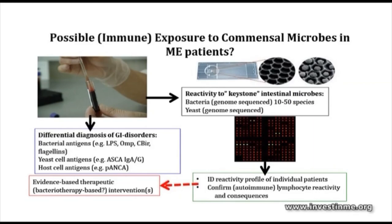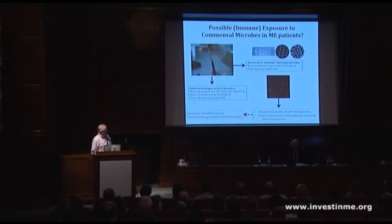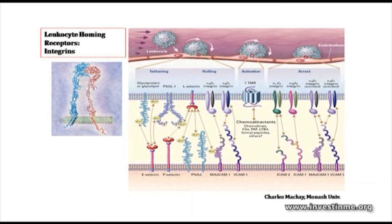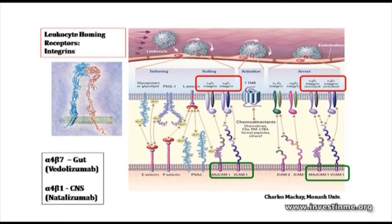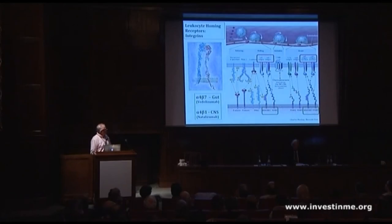This may lead eventually to evidence-based therapeutic interventions for treating ME. We'll also look for brain-circulating lymphocytes. There are molecules called integrins made up of two different polypeptide chains — different combinations allow leukocytes to circulate, tether, roll, become activated, and cross the capillary boundary. Certain integrin combinations are linked to homing to the gut or homing to the brain. Antibodies developed to block this homing are proving to have some beneficial effects in certain disease states. We'll look for evidence of these brain-homing lymphocytes in ME patients.